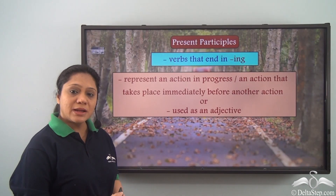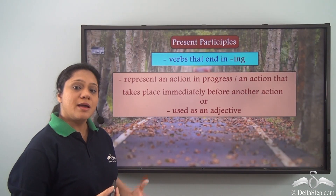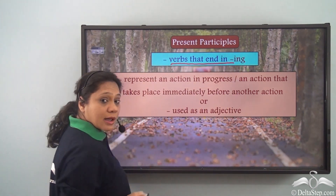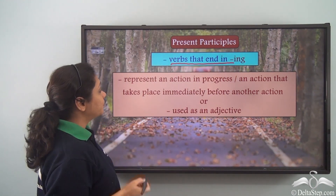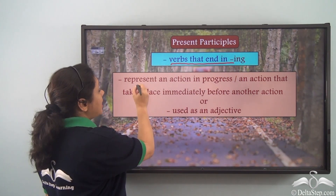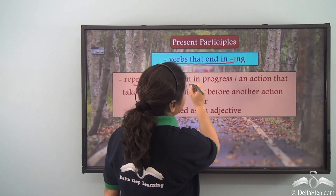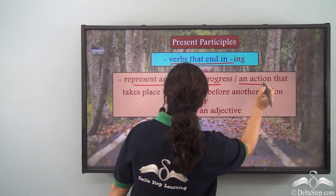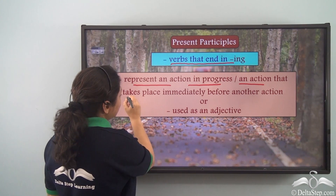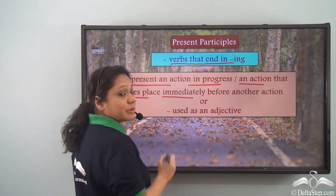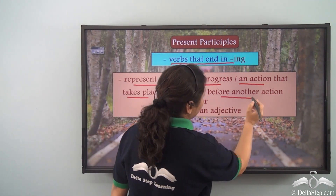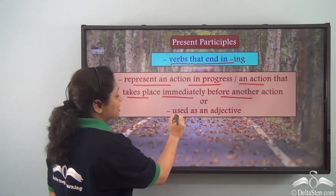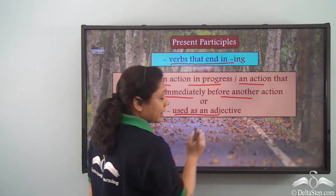So what are present participles? Present participles are verb forms that end in -ing. They either represent an action in progress, or an action that takes place immediately before another action. Present participles can also be used as an adjective.